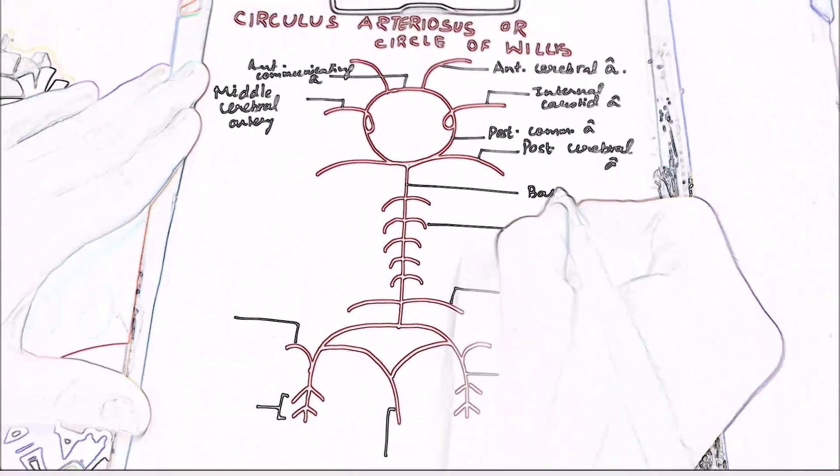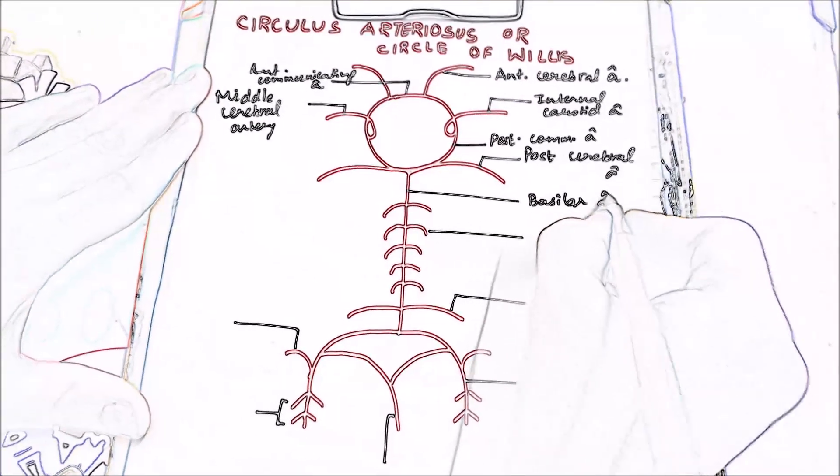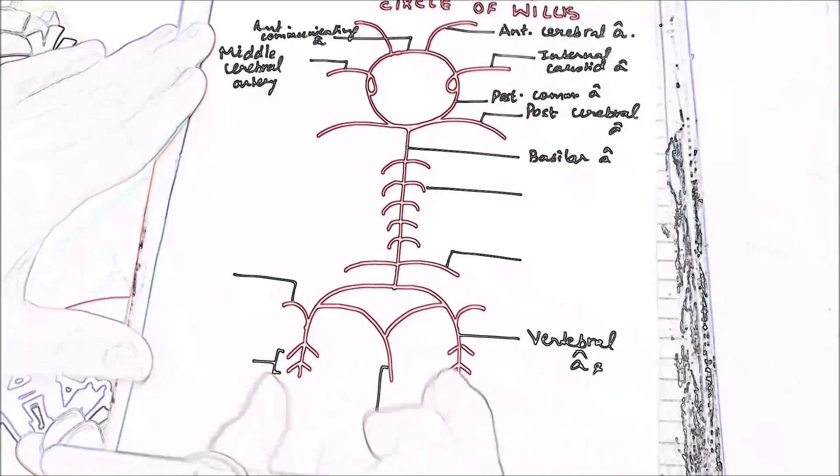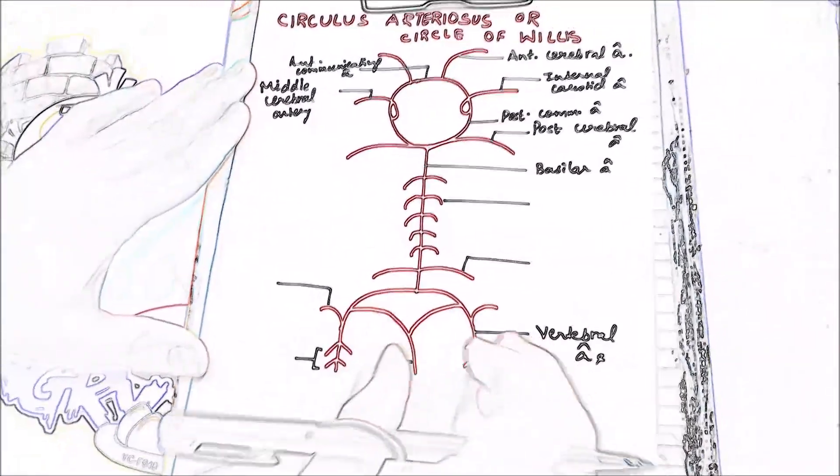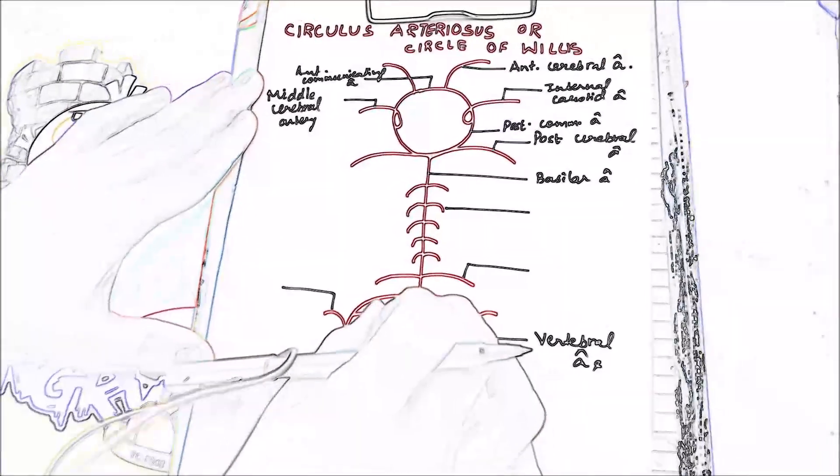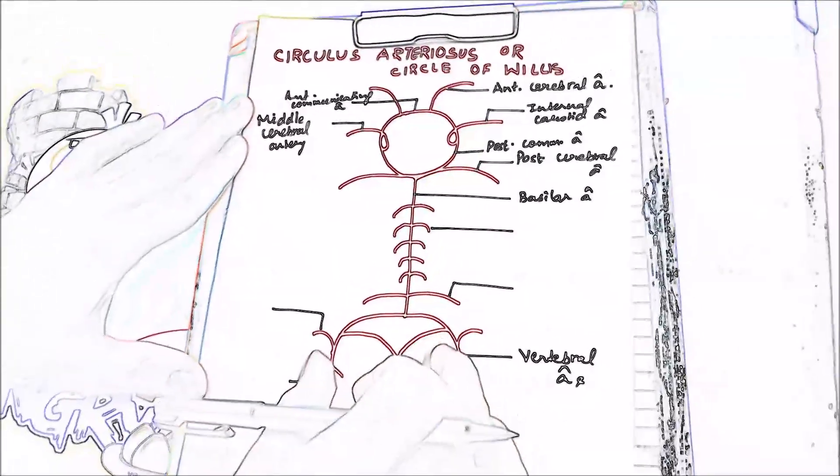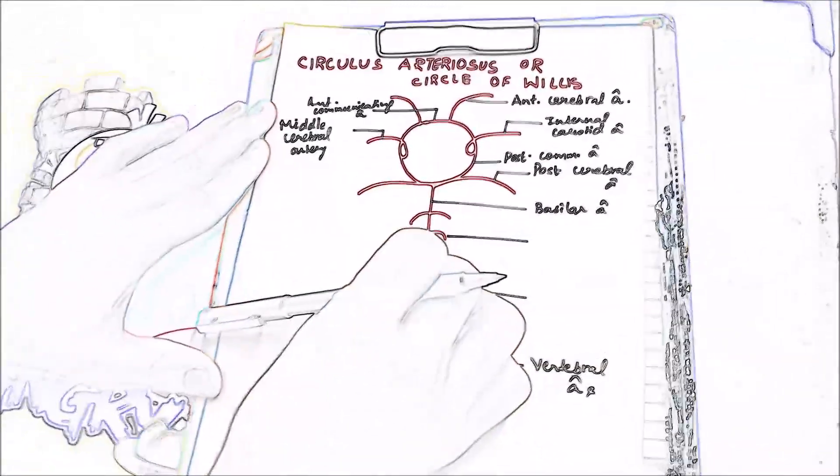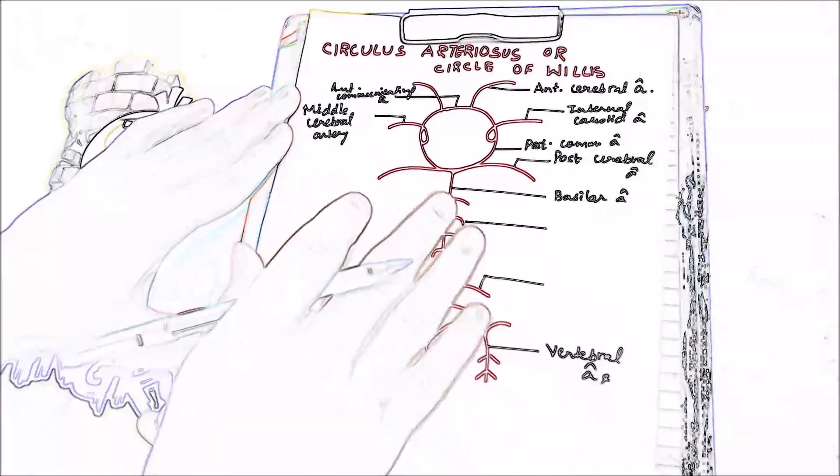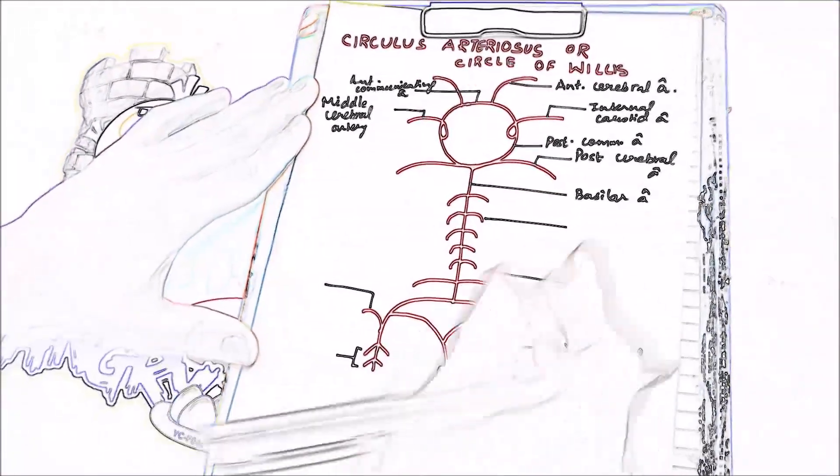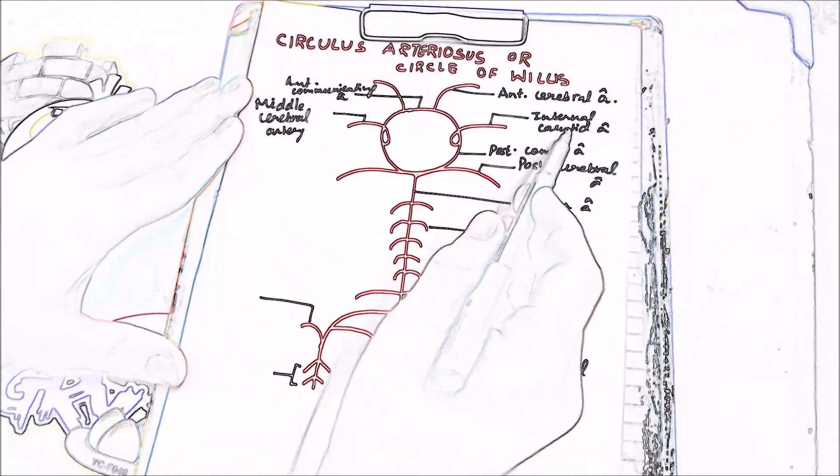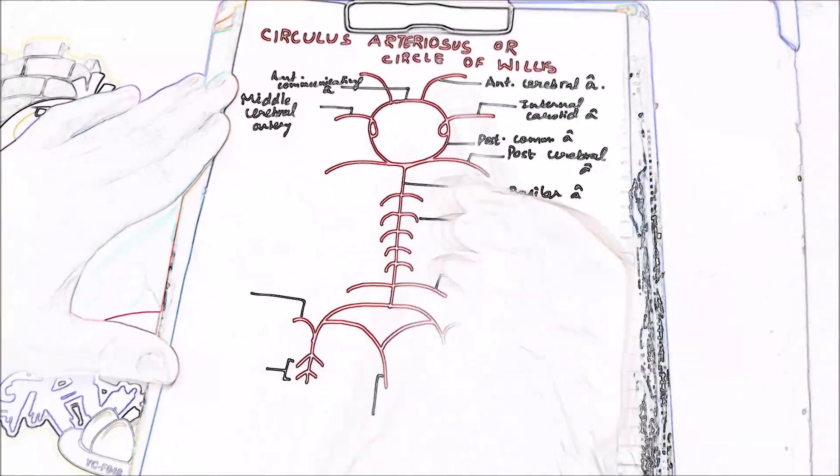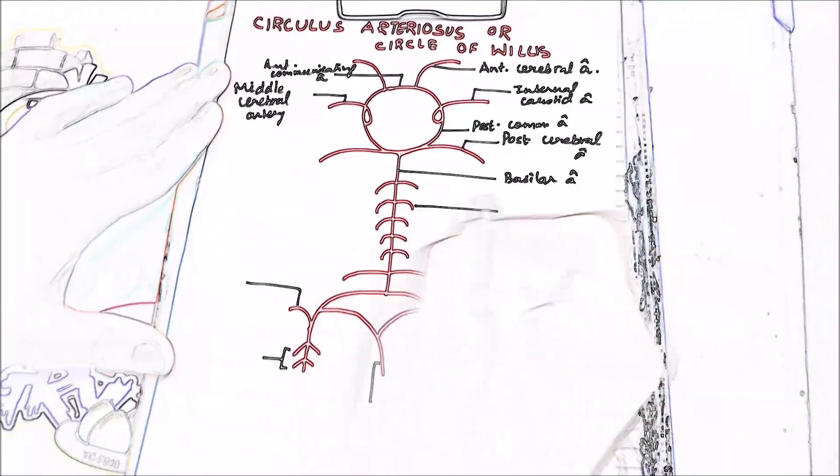The vertebral arteries go from the vertebrae, from the transverse foramina in the spaces along the transverse foramina of the cervical vertebrae. They converge in the clivus to form the basilar artery, which anastomoses with all branches of the internal carotid arteries to make the Circle of Willis.